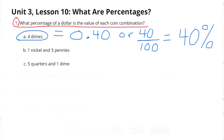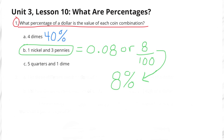B. One nickel and three pennies. One nickel and three pennies is 8 cents, or 8 one-hundredths, or 8%.